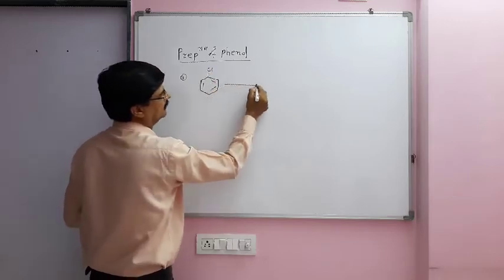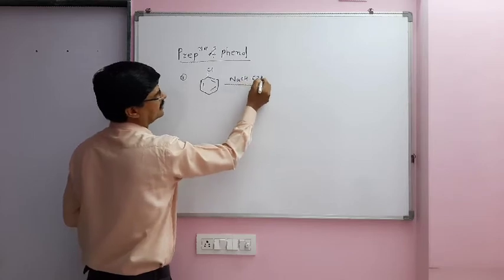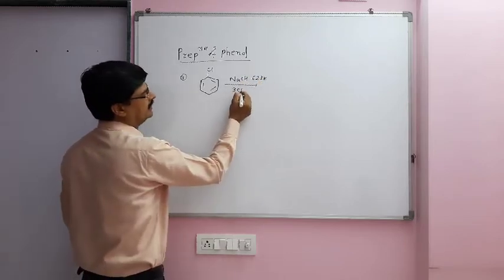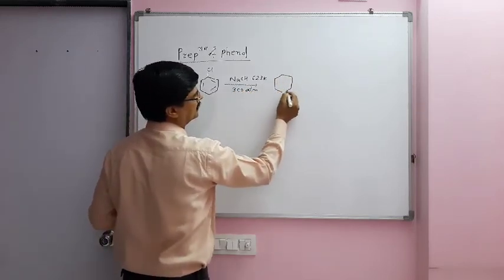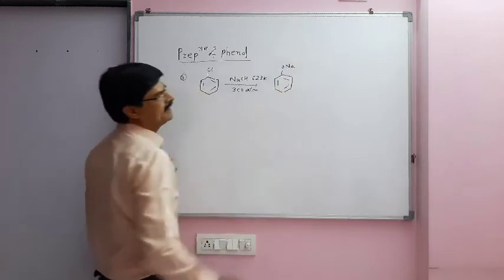Chlorobenzene reacts with NaOH at 623 Kelvin temperature and 300 atmospheric pressure. In the first step, sodium phenoxide is formed.